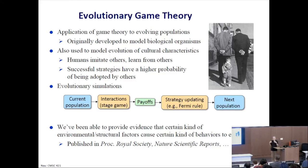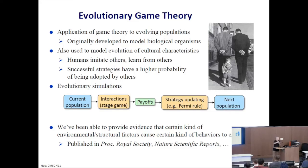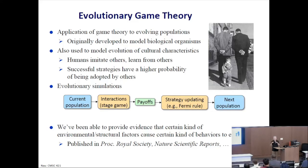Why do we want to do this? If you are a social psychologist, you can do field studies in which you discover correlations between various kinds of external or structural factors in a society and various kinds of ways that the people in that society behave. If you establish a correlation, one of the things you might be interested in is whether these structural characteristics have some sort of causative role on these behaviors. By using evolutionary simulations, we have been able to provide some evidence that there are causative roles in some cases. That has led to some publications in high-profile journals like the Proceedings of the Royal Society or Nature Scientific Reports — things that computer scientists usually would not even think of publishing in.